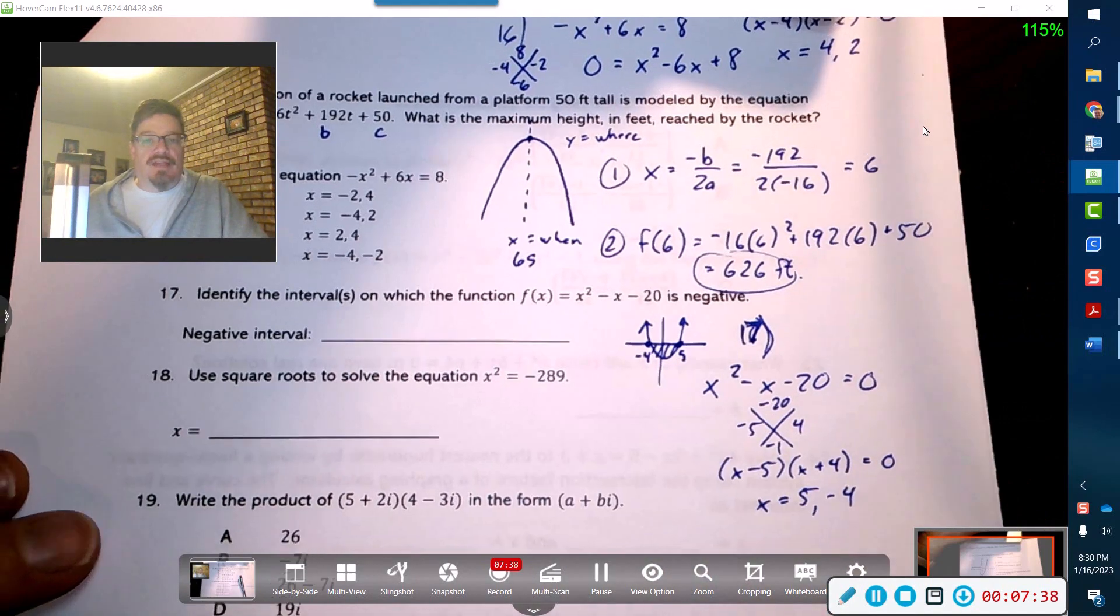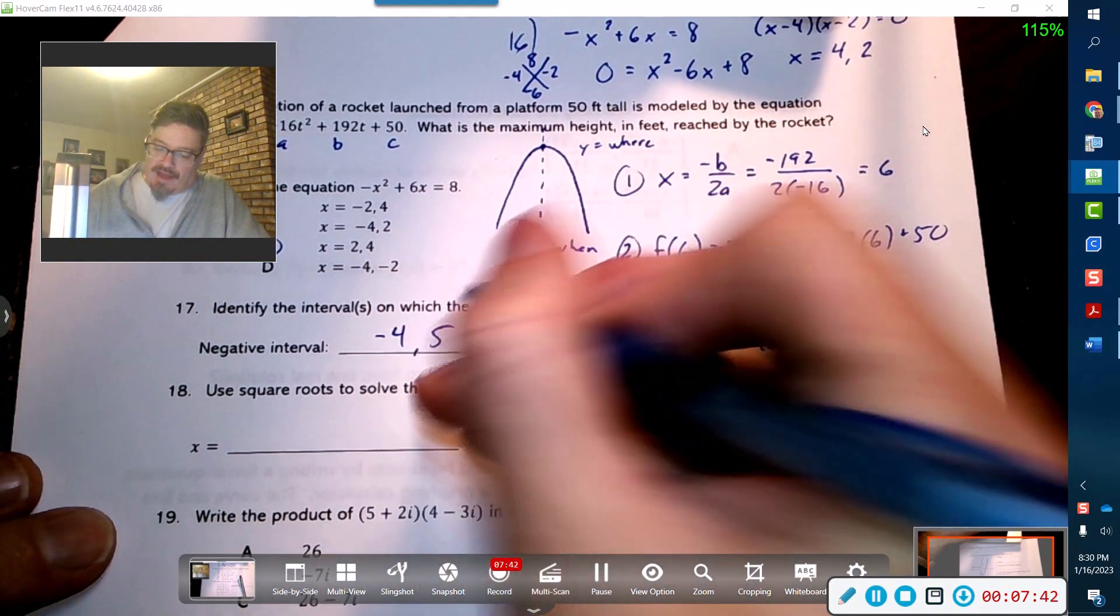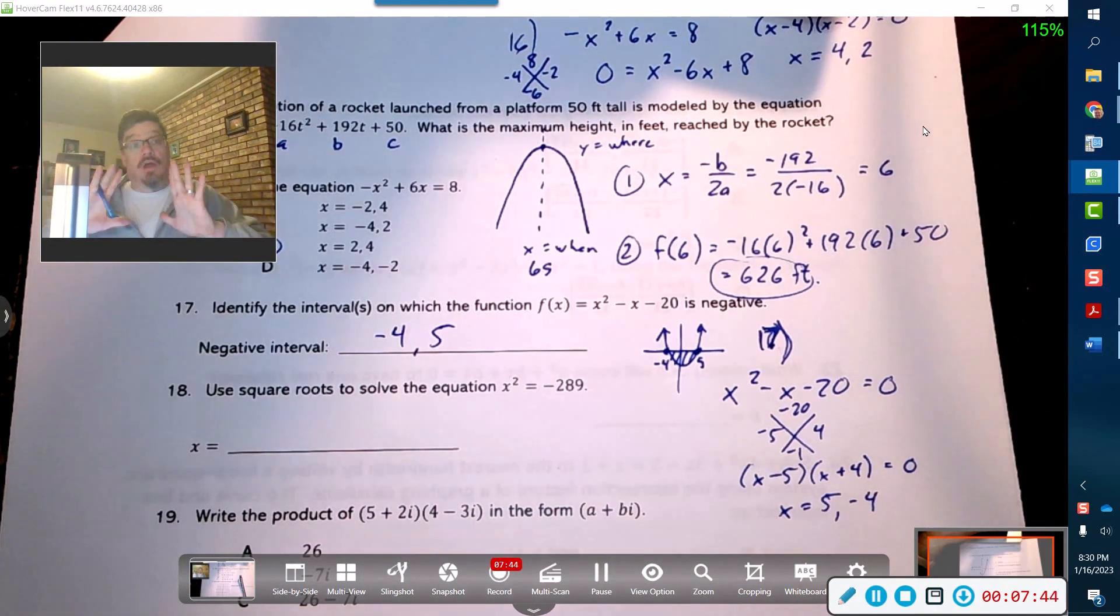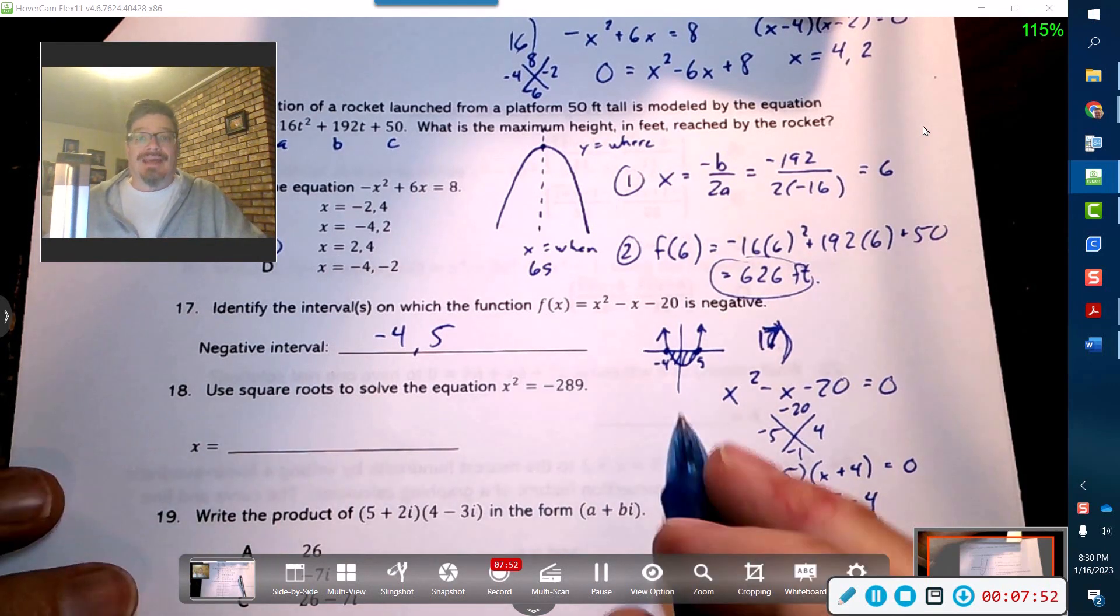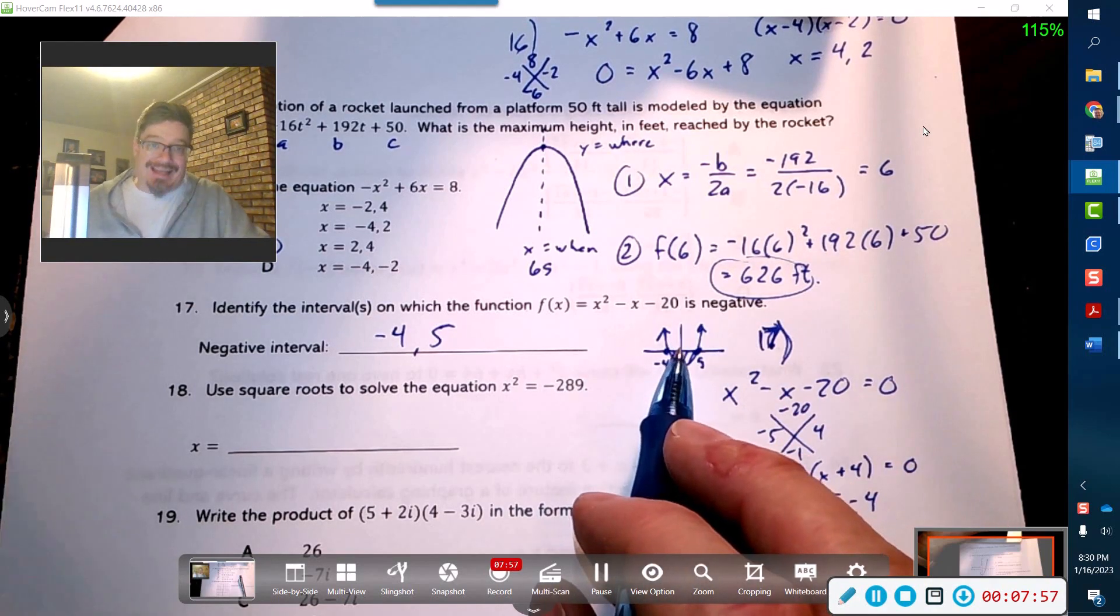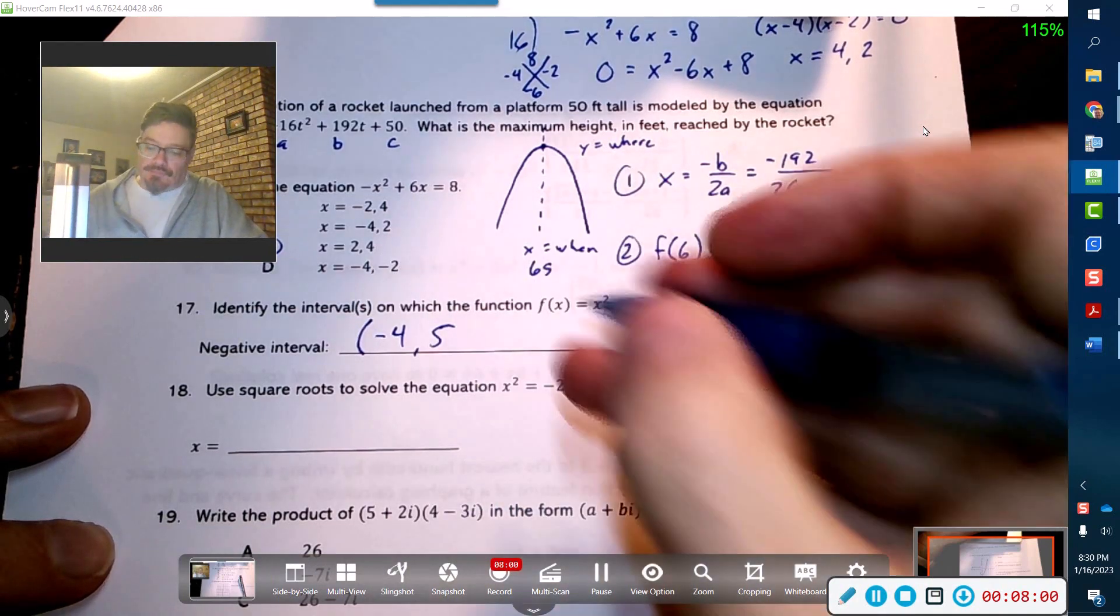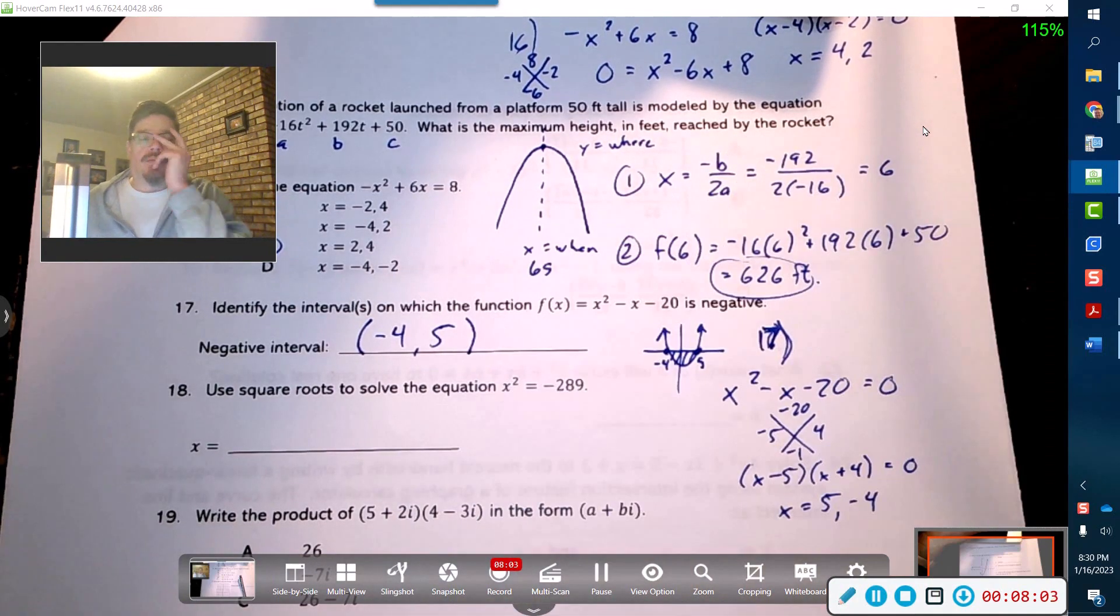So this means that negative four and positive five is my interval. Now you'll notice that I left the parentheses or the brackets blank for a second. I gotta think, am I allowed to be zero at those locations? It just says is negative. Now if I'm on the x-axis that means that I am not negative, I'm completely neutral. So in this context I want to make sure that I do not include those specific points.